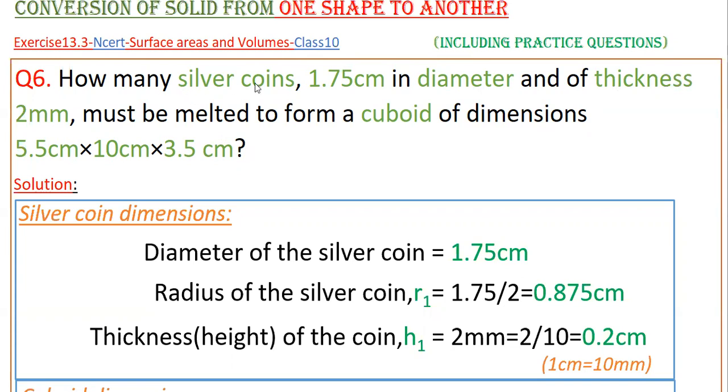Here you have to find the number of silver coins to be melted to form a cuboid. The dimensions of the silver coin and cuboid are given, and the silver coin is in the shape of a cylinder.